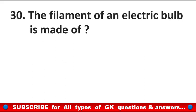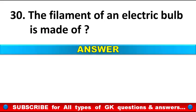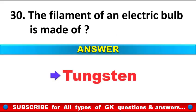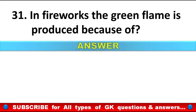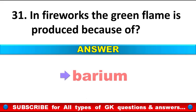The filament of an electric bulb is made of? Answer: Tungsten wire. In fireworks, the green flame is produced because of? Answer: Barium.